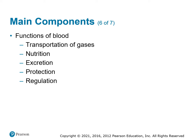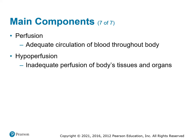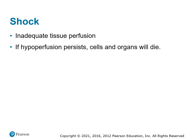Functions of the blood include transporting gases — oxygen, carbon dioxide, nitrogen — and moving nutrients like glucose to the end organs. It also handles excretion of extra fluids, provides protection via white blood cells that identify infections, bacteria, fungi, and viruses, and helps regulate body functions as the main transport for hormones. Perfusion is adequate circulation of blood throughout the body; hypoperfusion is inadequate perfusion. Shock is basically inadequate perfusion — if hypoperfusion continues, organs and cells die.